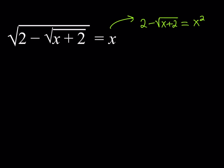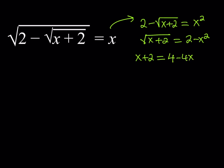So I squared both sides. Now of course you have another radical, so you want to get rid of that as well. Let's go ahead and isolate that radical on the right-hand side. So we get square root of x plus 2 is equal to 2 minus x squared, and now we'll square both sides one more time. This should give us x plus 2 is equal to the square of 2 minus x squared, which is a minus b squared — remember, that's a squared minus 2ab plus b squared. Therefore, this will equal 4 minus 4x squared plus x to the fourth power.